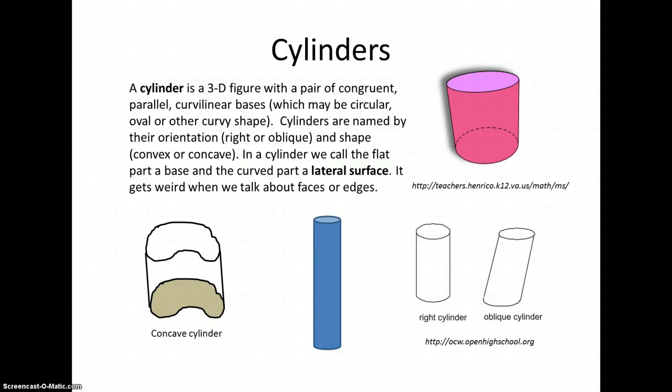They're parallel to each other, and we call them curvilinear, which means they're some sort of circularish kind of form. This may be circular, oval, or another curvy shape as shown in the concave cylinder at the bottom. The green highlighted base is sort of a kidney bean shape, but because it doesn't have straight edges, it's curvilinear, this can be a base of a cylinder.